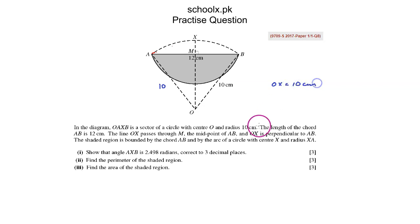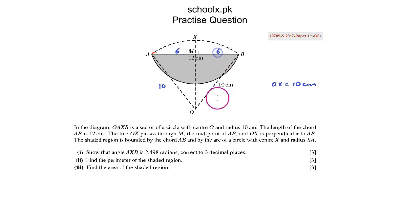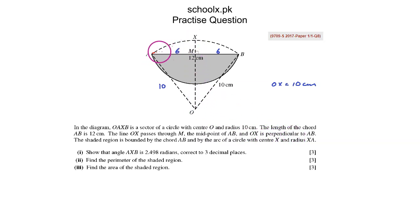The length of the chord AB is 12 cm. The line OX passes through M, and M is the midpoint of AB. So AB is 12, hence AM will be 6 and MB will be 6 cm. OX is perpendicular to AB.